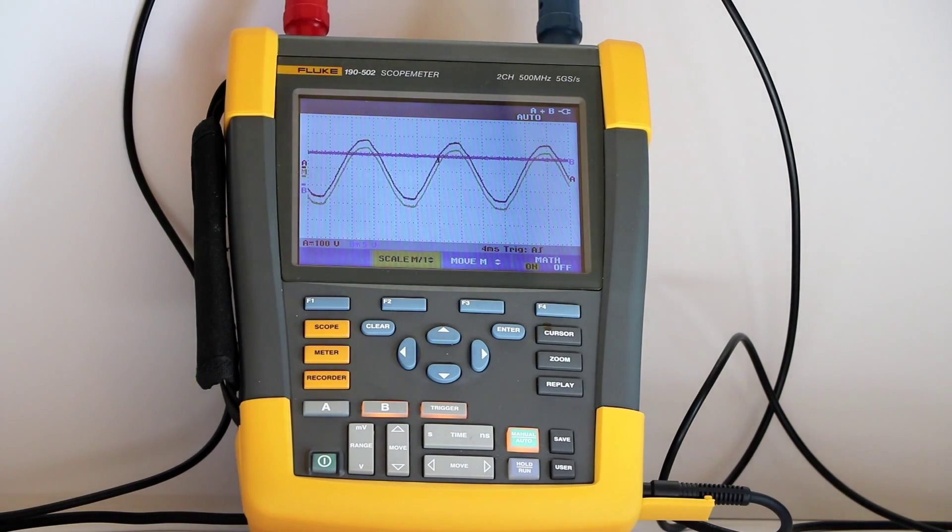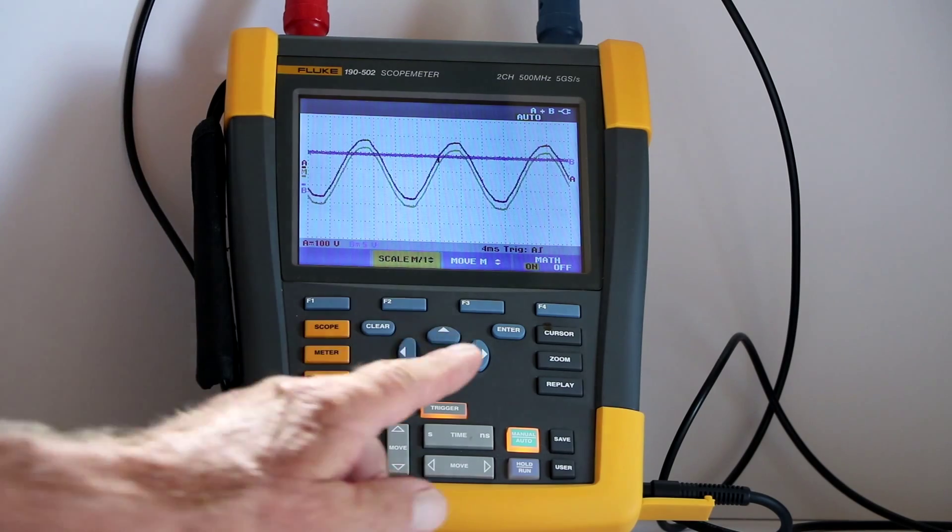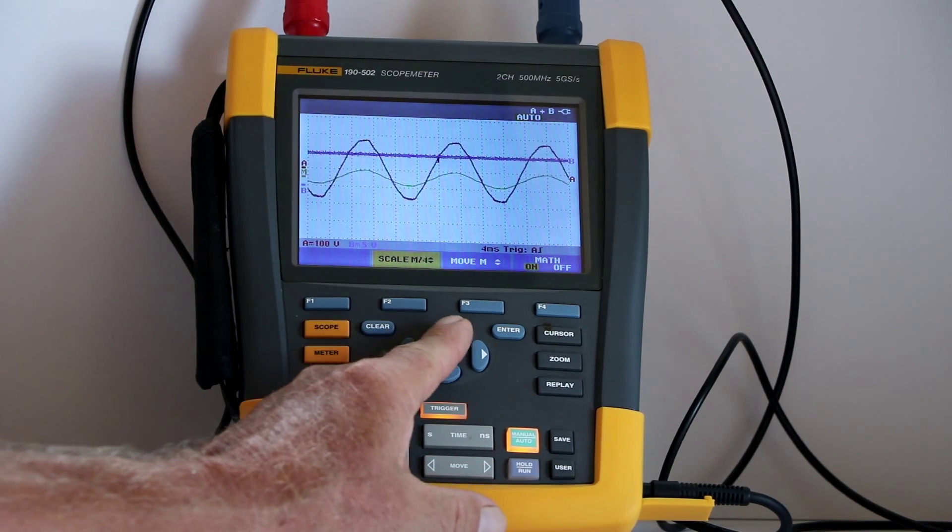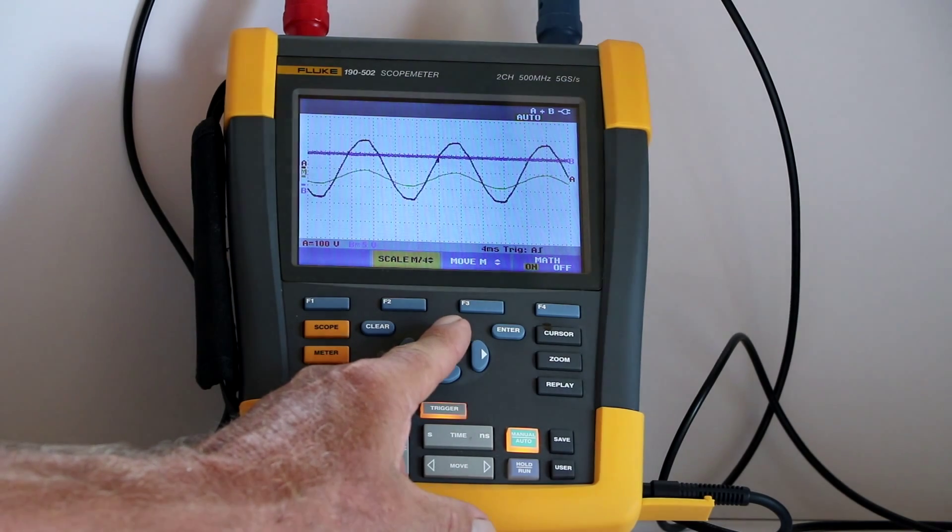These key labels are scale, move, and XY mode on and off. Finally, press the upper down arrow to select a scale. Notice that the scale mode changes for the resultant, but not for either of the inputs.